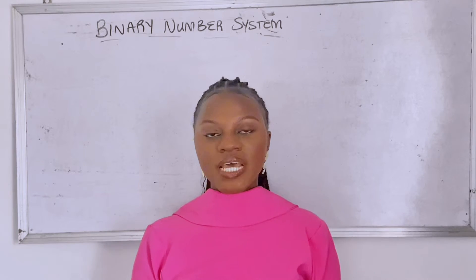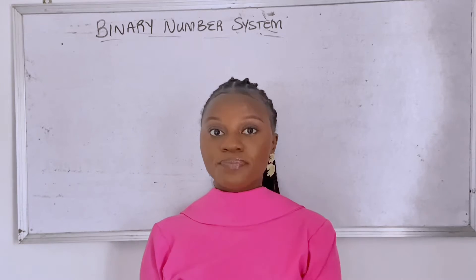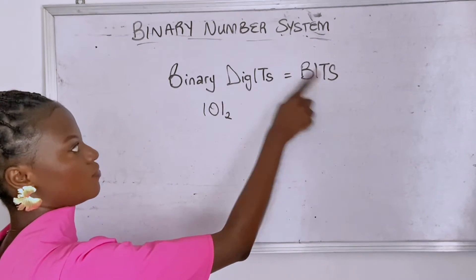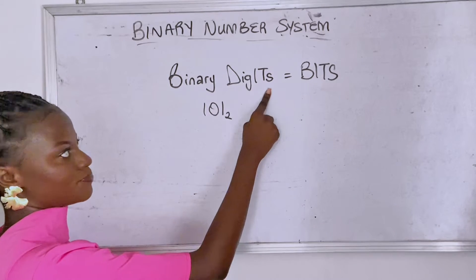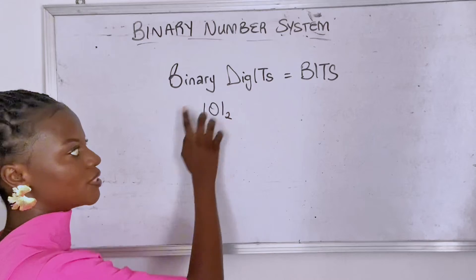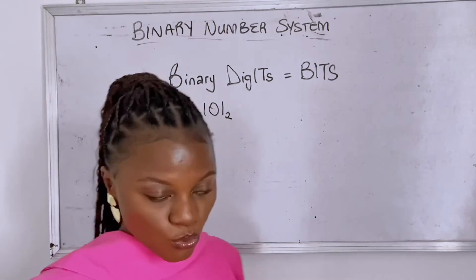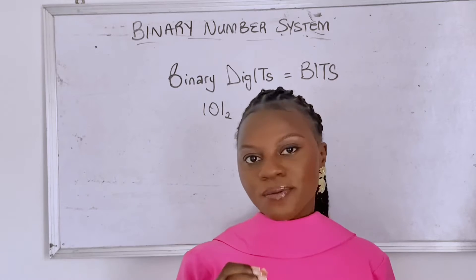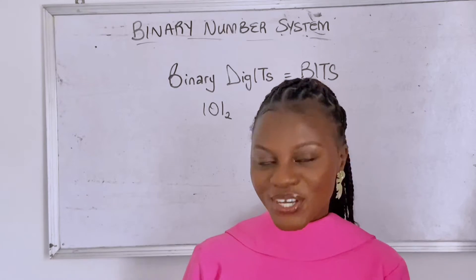They are called bits from the word binary digits. Did you get that? All right, and this is how they are represented - they always have a subscript of two. Wherever you see the subscript two with zeros and ones, you know we're talking about binary numbers.